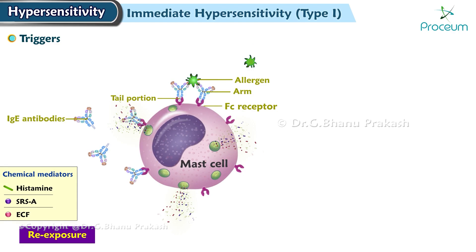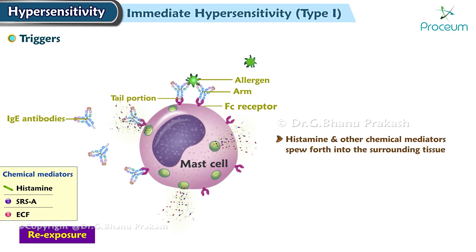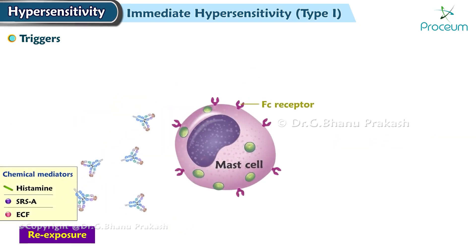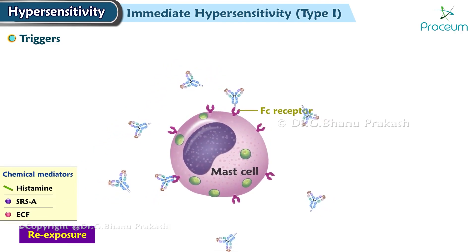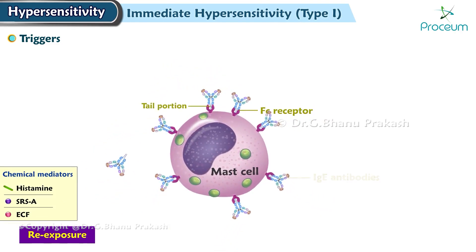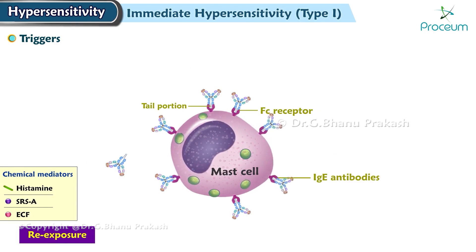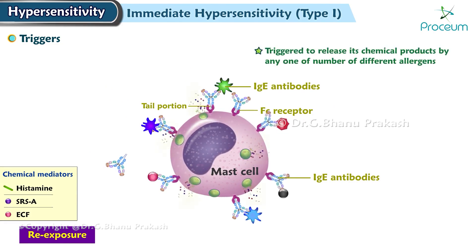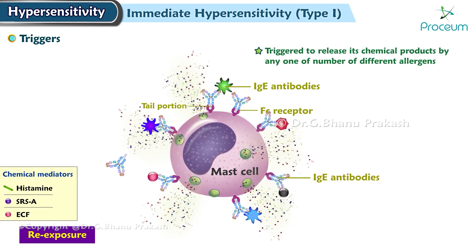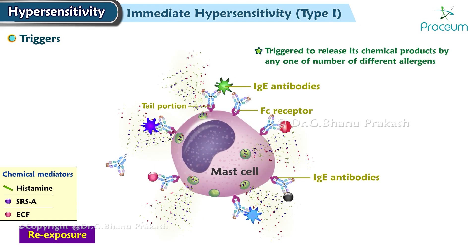As a result, histamine and other chemical mediators spew forth into the surrounding tissue. A single mast cell or basophil may be coated with a number of different immunoglobulin E antibodies, each able to bind with a different allergen. Thus, the mast cell can be triggered to release its chemical products by any one of a number of different allergens.